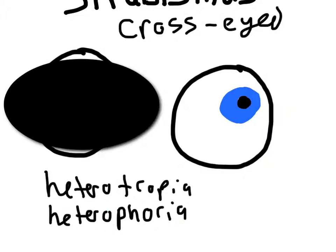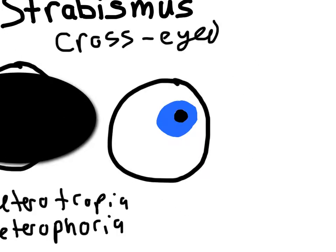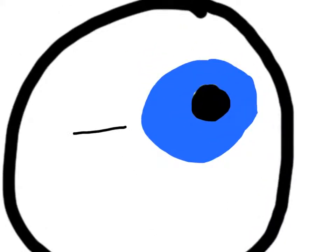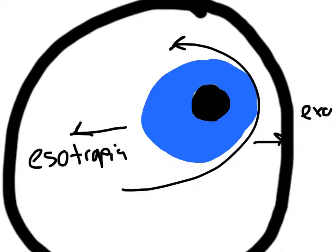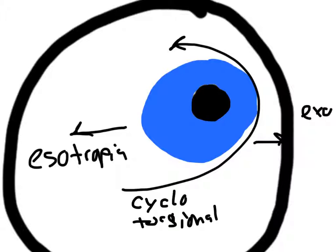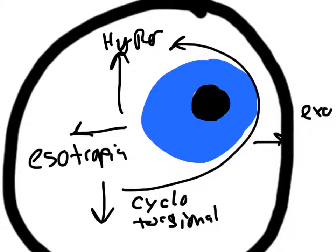Now let's look at some other terminology. If the eye is pointing inward, that is known as esotropia. If it's pointing outward, that's exotropia. You can also have a circular gaze, which is called cyclo- or torsional strabismus. If the affected eye gaze is higher than the forward-gazing eye, that's hypertropia, and if it's lower, it's hypotropia.